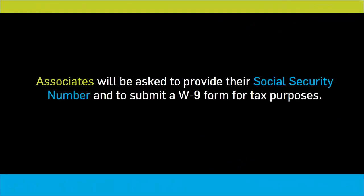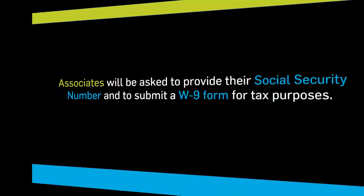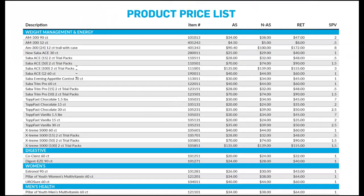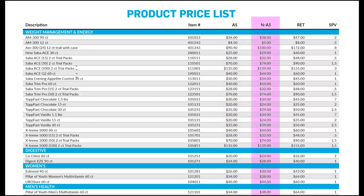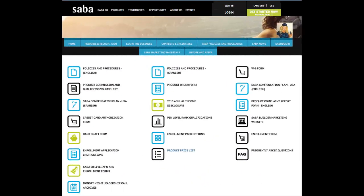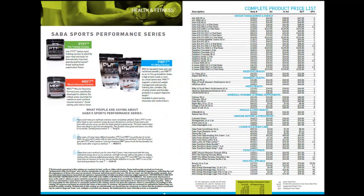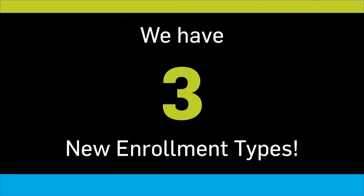Associates will be asked to provide their social security number and to submit a W-9 form for tax purposes. We have three new enrollment types. Within these enrollment types, your new preferred customer or associate may set up an auto ship or monthly shipment and receive AS or auto ship pricing, or they can place a regular one-time order and receive non-auto ship pricing, which is just above wholesale pricing. The product price list can be found in your Saba for Life back office under 'Learn the Business' or in the chart at the back of the Saba product catalog.